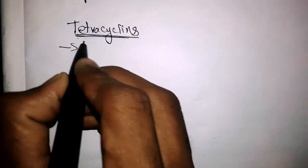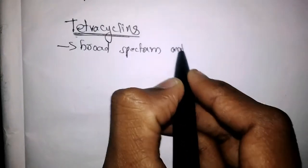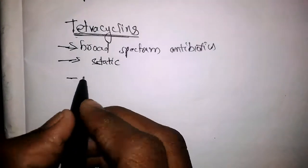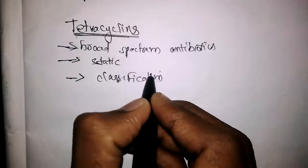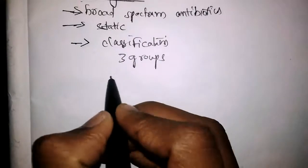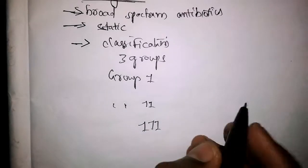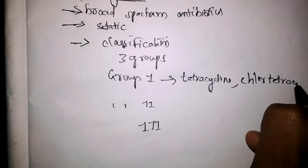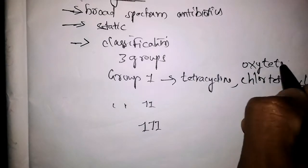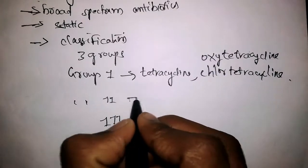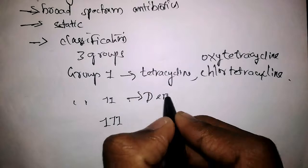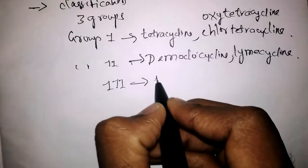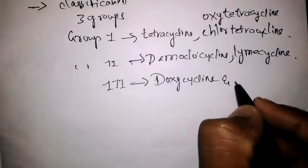Let us discuss about tetracyclines. Tetracyclines are broad spectrum antibiotics; they are mainly bacteriostatic. If we take classification, they are divided into three groups. In group one we have tetracycline, chlortetracycline, and oxytetracycline. In group two we have demeclocycline and lymecycline. And in group three we have doxycycline and minocycline.